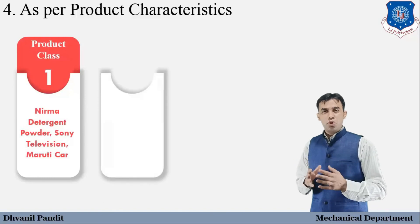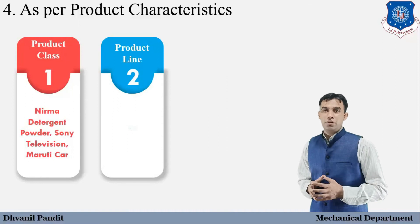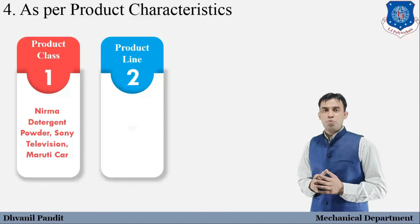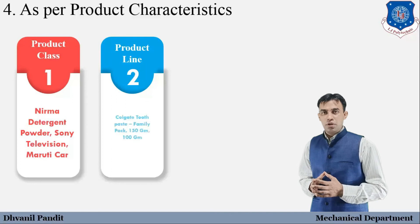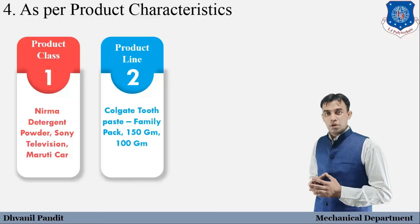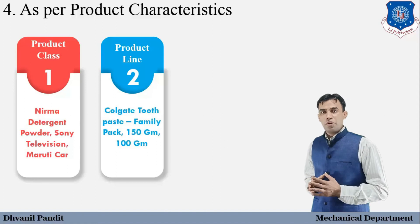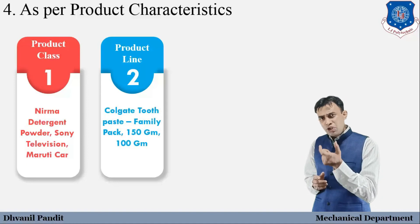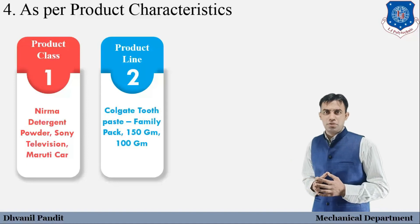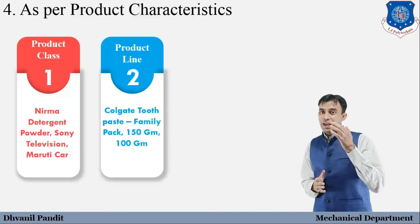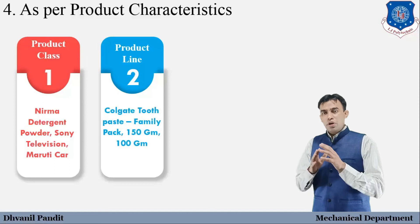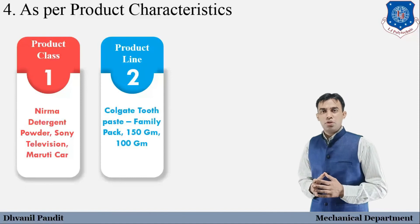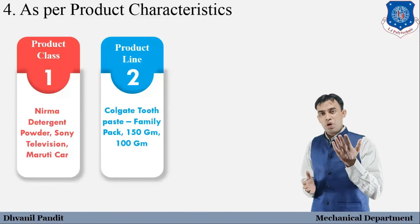One more type under product characteristics is product line. Within a single brand, there are many different product options. For example, Colgate Toothpaste comes in a family pack and various other variants. Each of these variants is still part of the same brand but represents a different product in the product line.